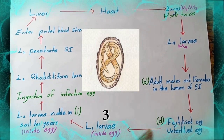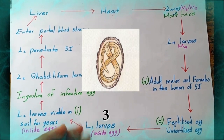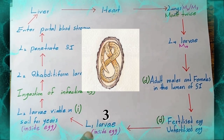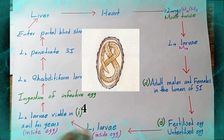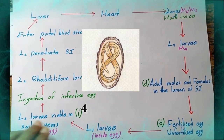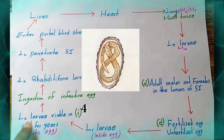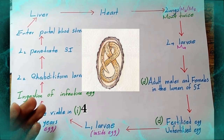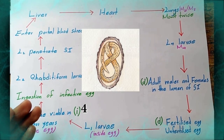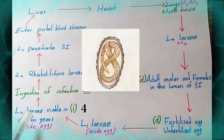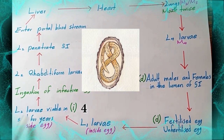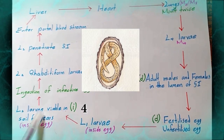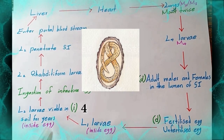Fertilized eggs become L1 larvae — L1 larvae inside the eggs. After that, L1 larvae become L2 larvae. L2 larvae is the infective stage of the Ascaris lumbricoides life cycle. L2 larvae is viable in soil for years, and L2 larvae also remain inside eggs.